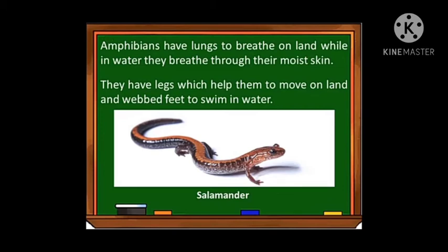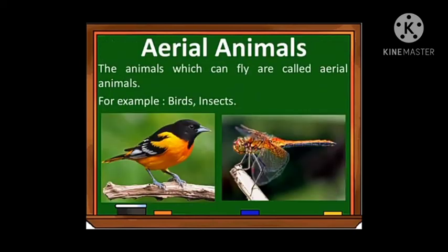Amphibians have legs which help them to move on land, and webbed feet to swim in water. Whenever they are on land, they walk with their legs; whenever they are in water, the webbed feet help them swim.